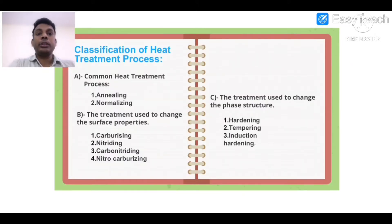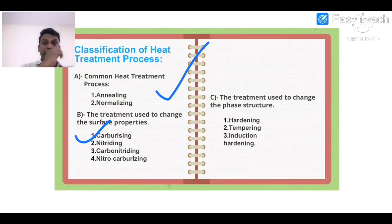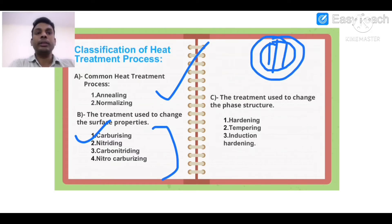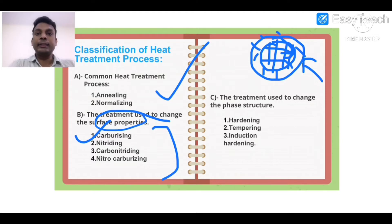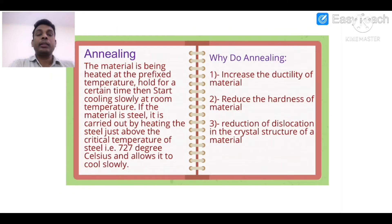Classification of heat treatment processes: I have classified it into three categories A, B, and C. Common heat treatment processes include annealing and normalizing. Category B treatments are used to change surface properties — the upper surface layer hardness is increased. Category C treatments change the phase structure of the whole piece at the micro level. Let's look at them one by one for more clarity.